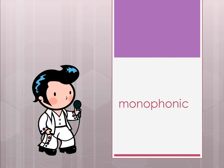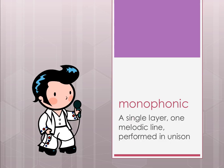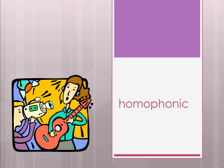Monophonic — represented by one little Elvis — means a single layer: one melodic line performed in unison. The tricky thing is that monophonic texture can still be very thick; you could have a hundred people singing the same song, but if there's no melodic accompaniment, it's still monophonic because it's one single line or layer.